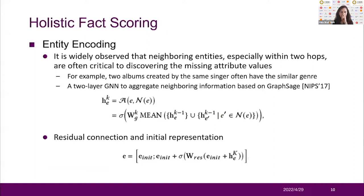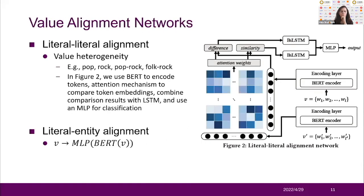We also employ a residual connection and the initial representation of entities to suppress the overfitting problem. To align heterogeneous values — for example, 'pop, rock' may be the categories of the same music, and 'pop, rock' can infer that the music also has the categories pop and rock — we need to align these values. To align these heterogeneous values, we use the network in Figure 2. We first use BERT to encode tokens, use attention mechanism to compare token embeddings, combine comparison results with LSTM, and finally use an MLP for classification. We also need to map the literals into the entity embedding space.